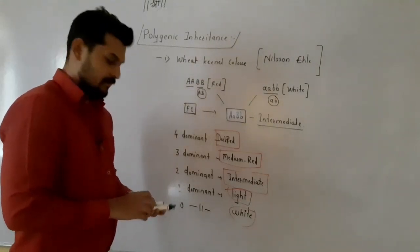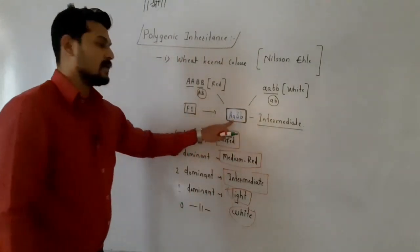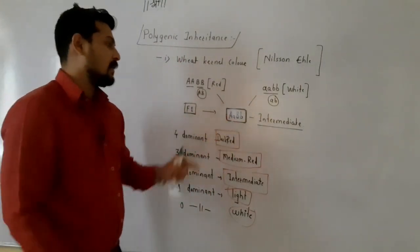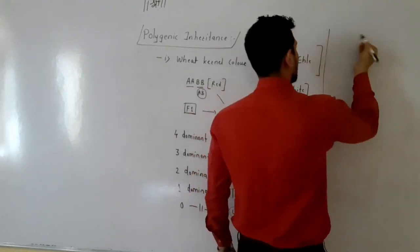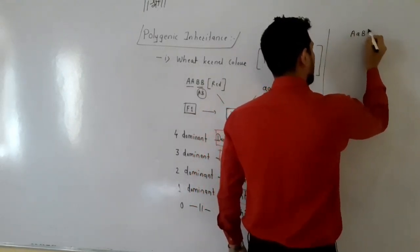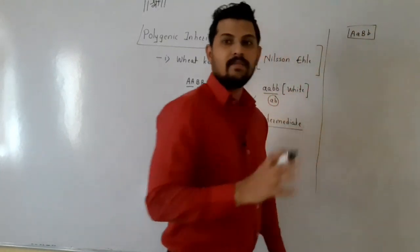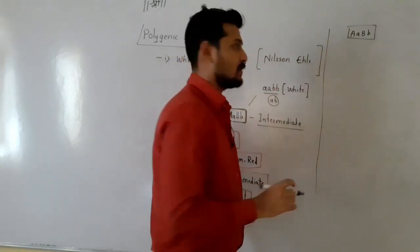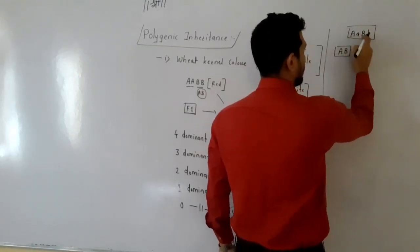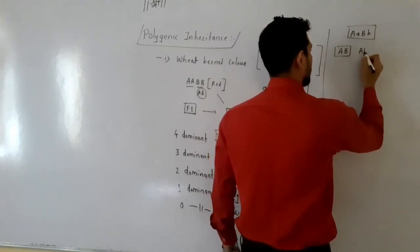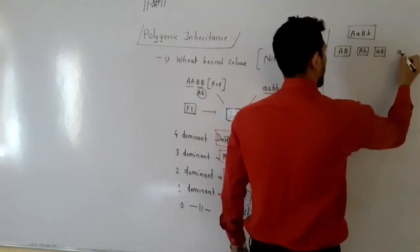The intermediate color is produced by the F1 offspring. When this F1 offspring (AaBb) is self-crossed, it produces four types of gametes: AB, Ab, aB, and ab.